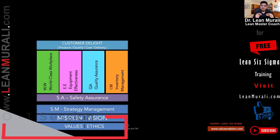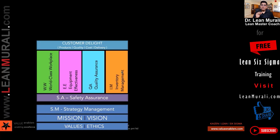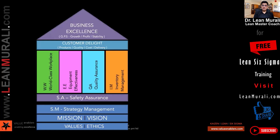Each of these pillars has its own blocks — we call them tools — and people must be equipped with those tools. That's why three things are important: TSM — tool set, skill set, and mindset. If you ensure these, you can achieve customer delight: the right product, quality, cost, delivery. The result is business excellence — growth, profit, and stability.